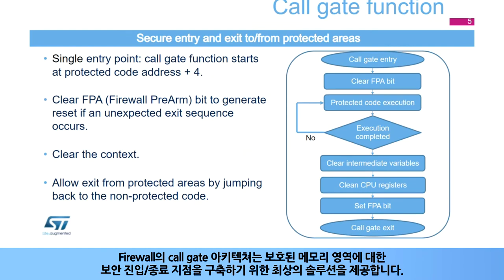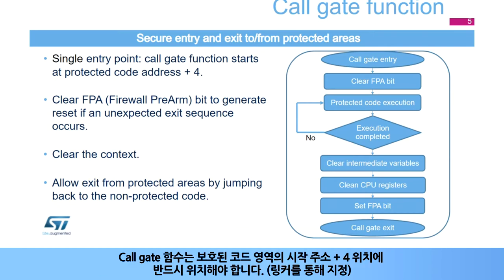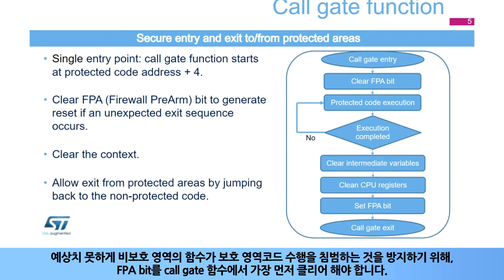The firewall's call gate function architecture offers the best solution for building a secure entry and exit point to the protected memory areas. The call gate function is located in the protected code segment at a mandatory fixed address corresponding to the code segment start address plus 4 — scatter file for Keil, pragma setup for IAR. The FPA bit has to be cleared immediately in the call gate in order to stop any intrusion that exits the protected code in a non-protected user area when not expected.